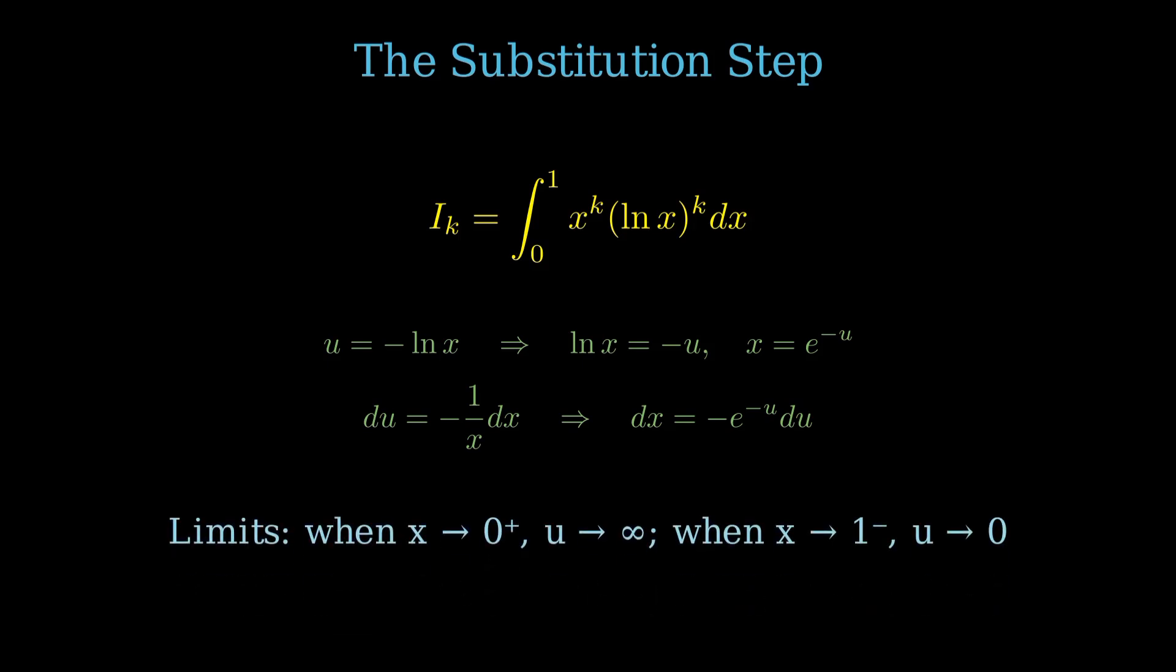Let's also check the limits. As x approaches 0 plus, u approaches infinity. As x approaches 1 minus, u approaches 0. Substituting all this in, our integral becomes the integral from infinity to 0 of e to the negative u to the k times negative u to the k times negative e to the negative u du.